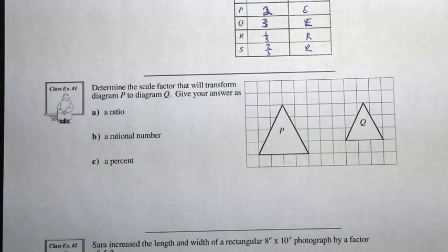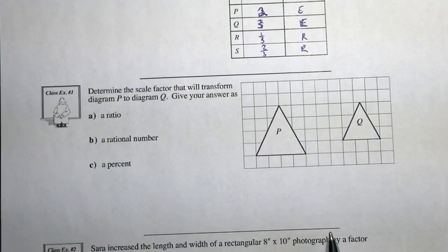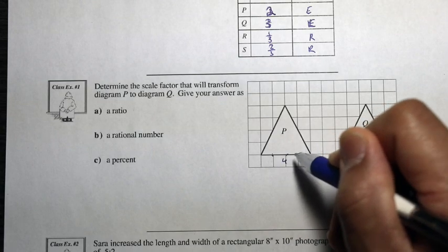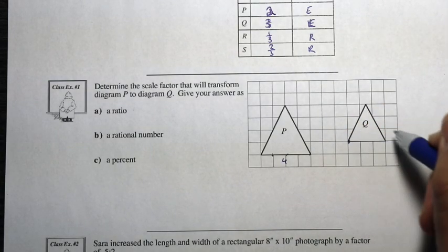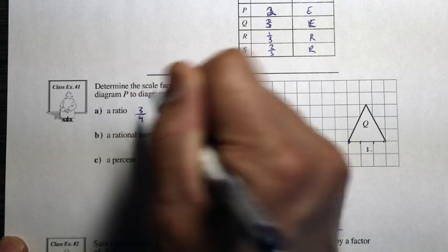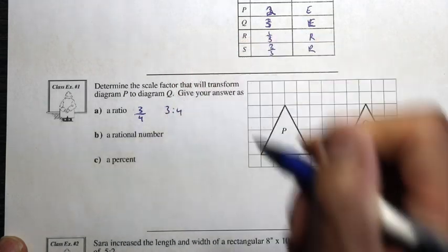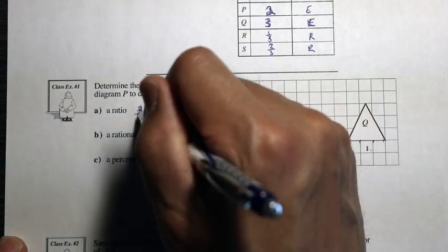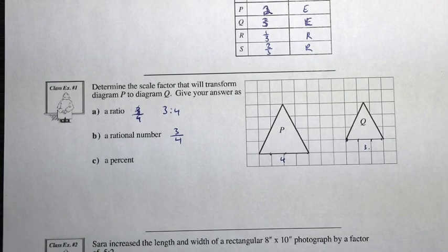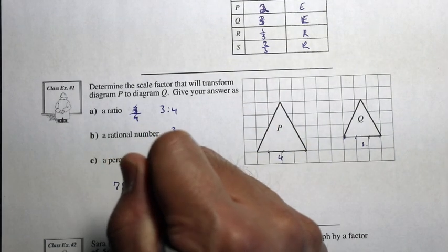Class example 1: determine the scale factor that will transform diagram P to diagram Q. Counting the units, the original length is 4 and the new length is 3. So the linear scale factor is 3 to 4 as a ratio, or 3 over 4 as a rational number, or 75% as a percent.